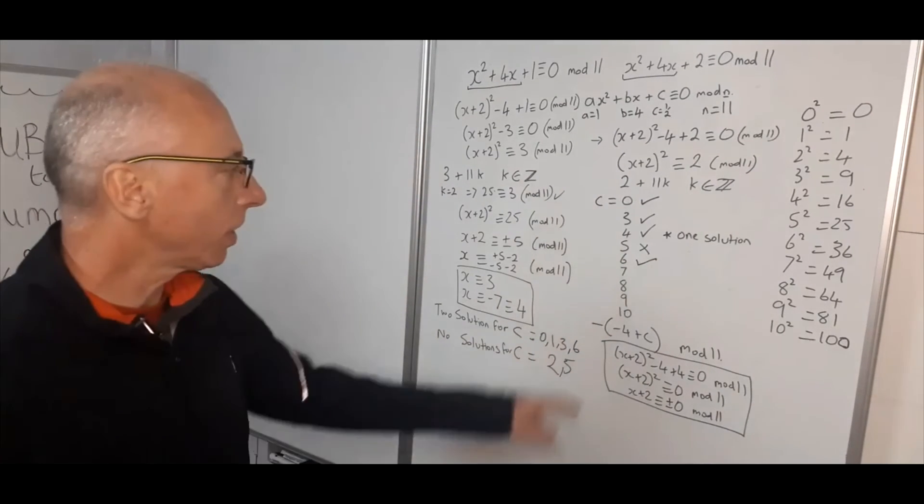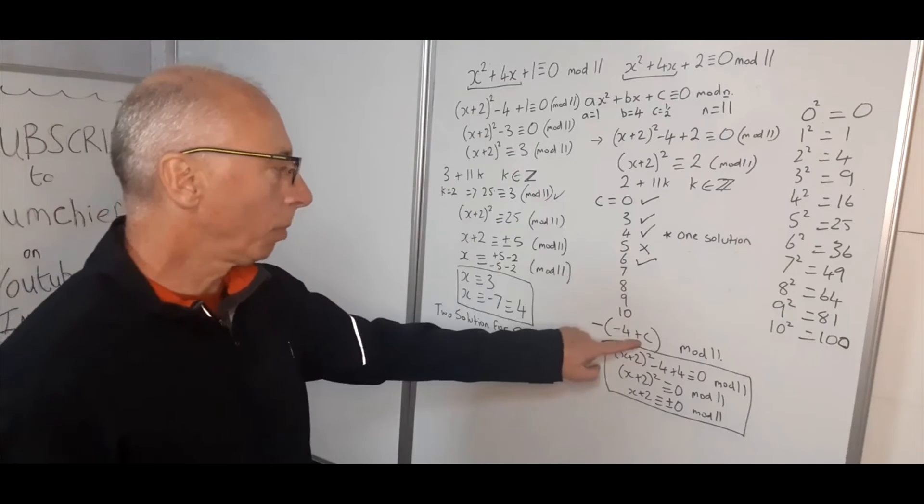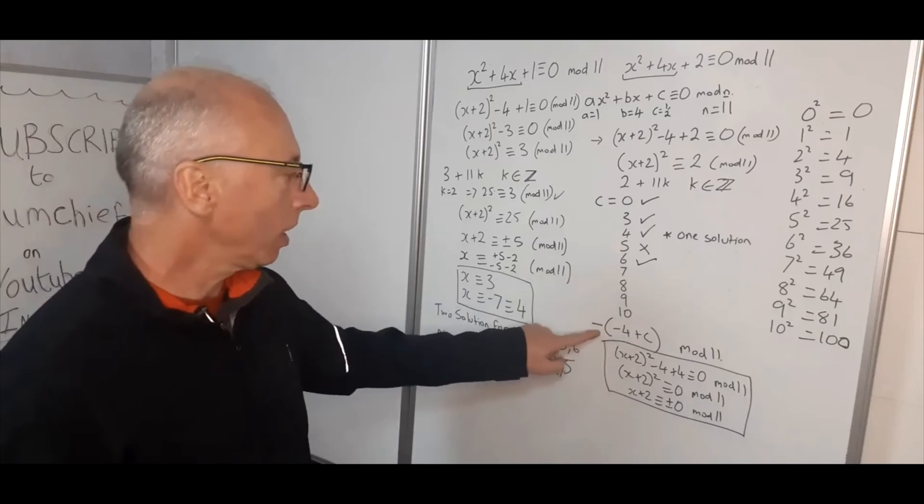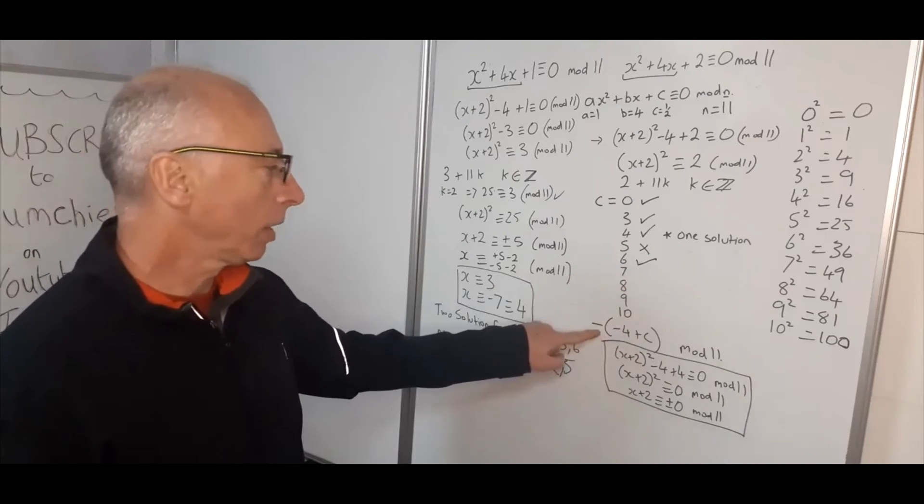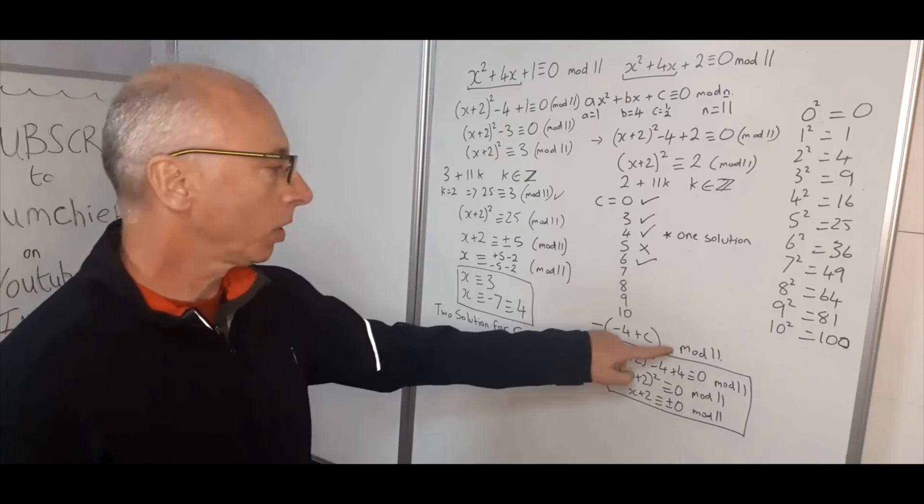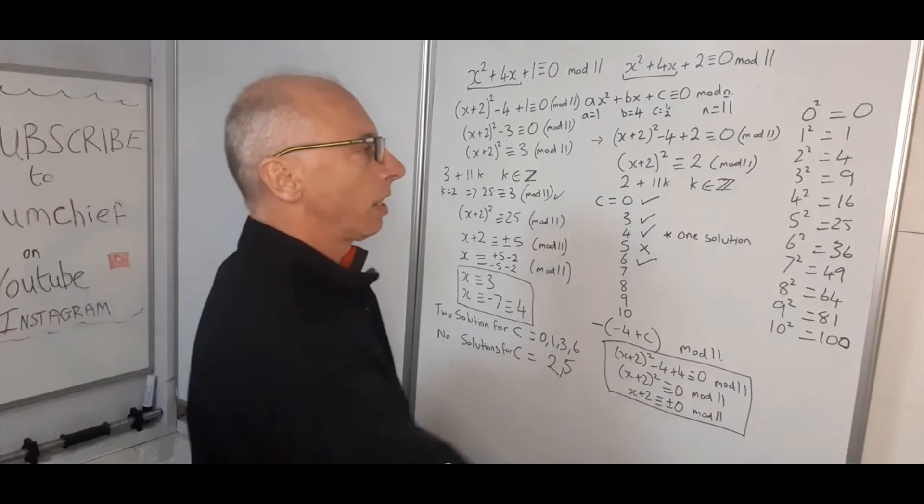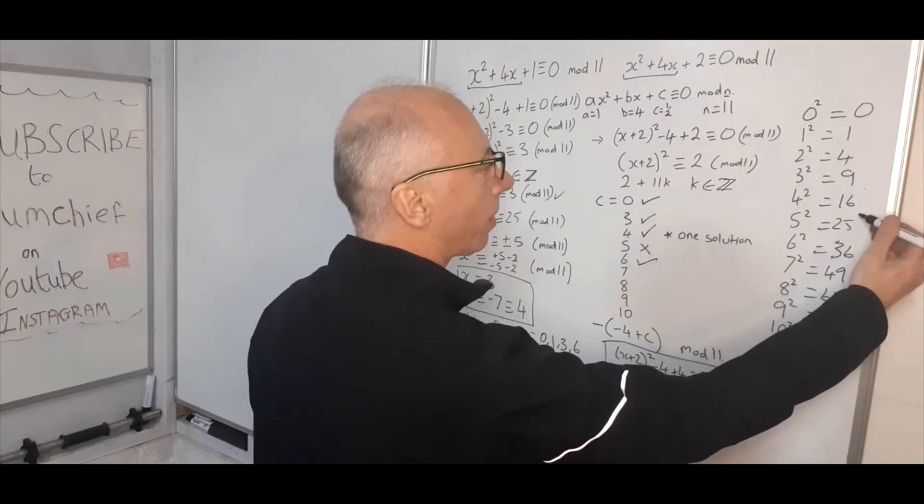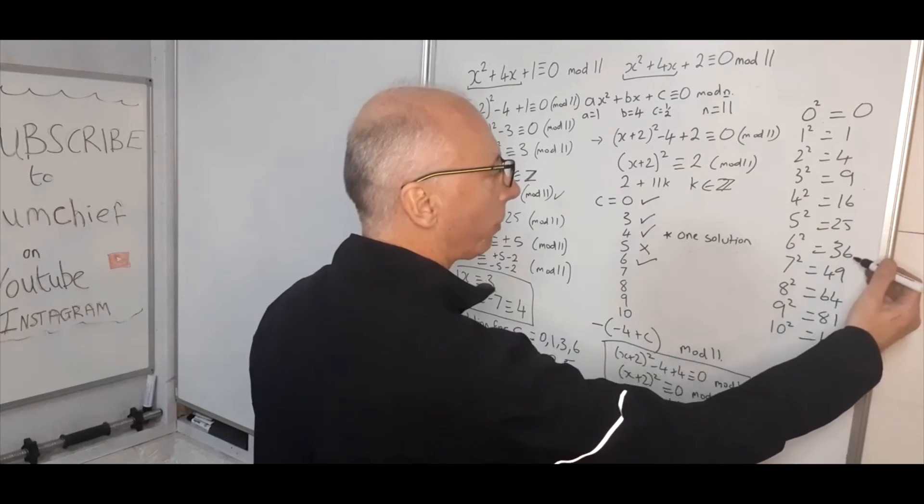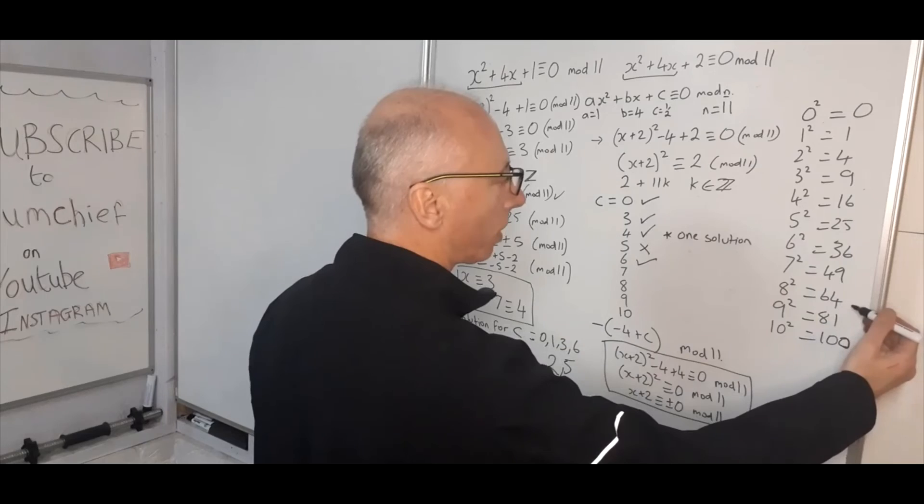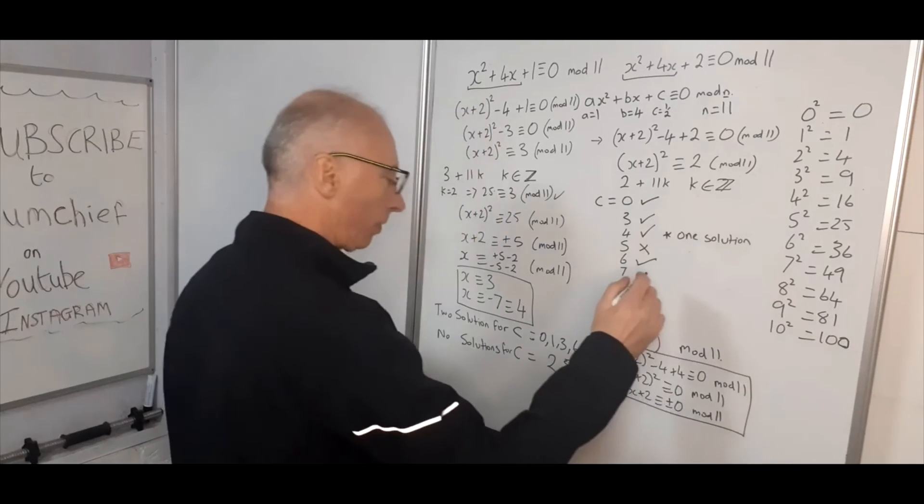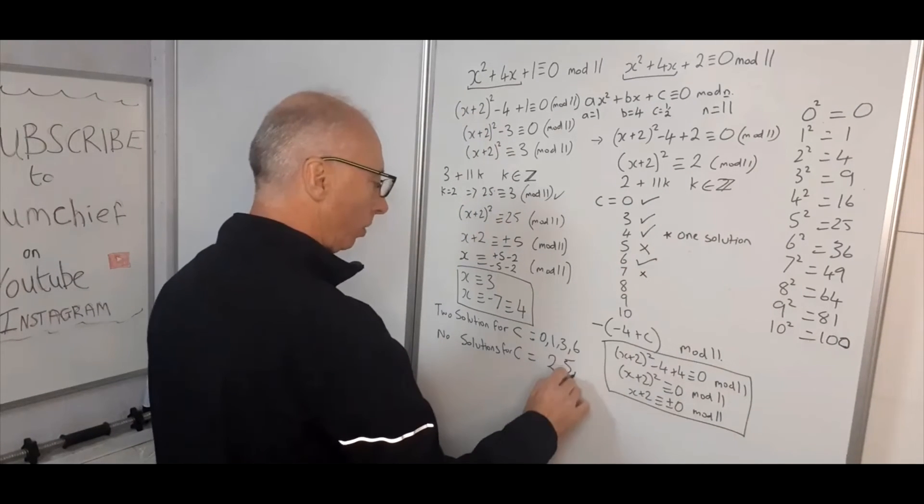Okay, now for 7. Minus 4 plus 7 is positive 3. Positive 3 will then give us minus 3. The mod 11 world will give us 8. So then we've got 8, 19, 30, 41, 52, 63, 74. So 7, I would say, has no solutions.